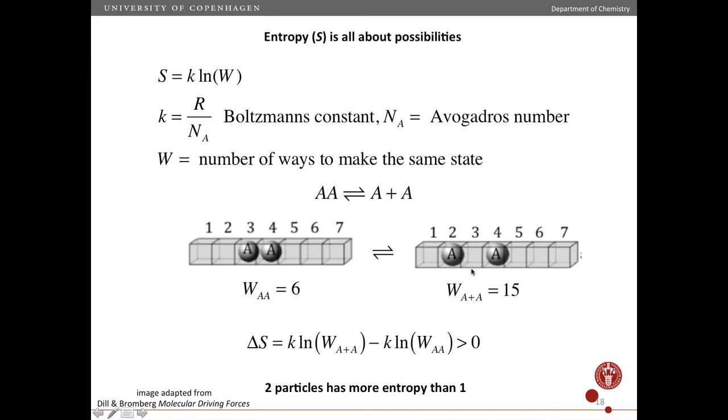If they're apart, and so by apart we mean that there's at least one empty box between them, then there's 15 ways of making this state. So here you have to sit down with a piece of paper and work all the possibilities through, but you'll find that there's 15.